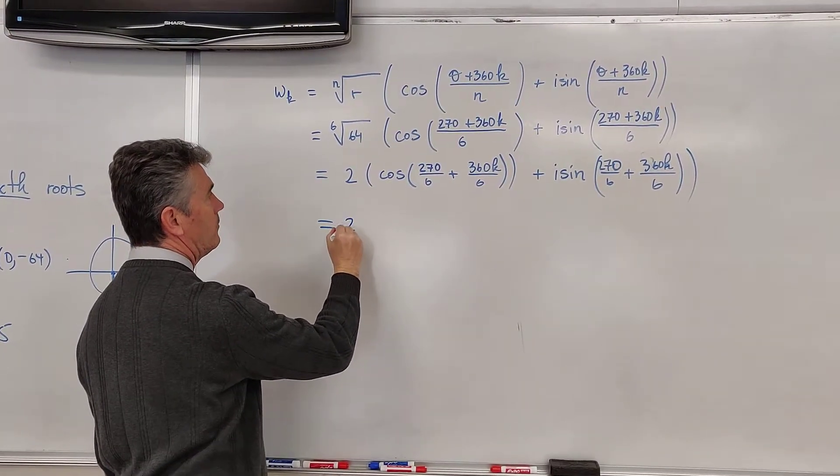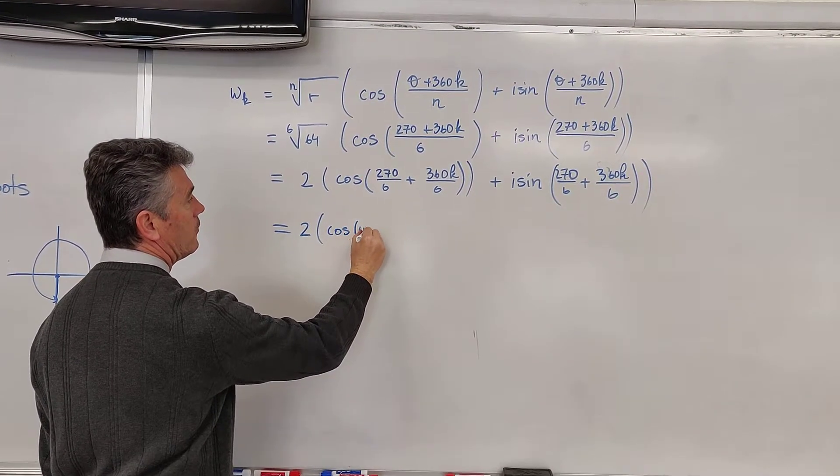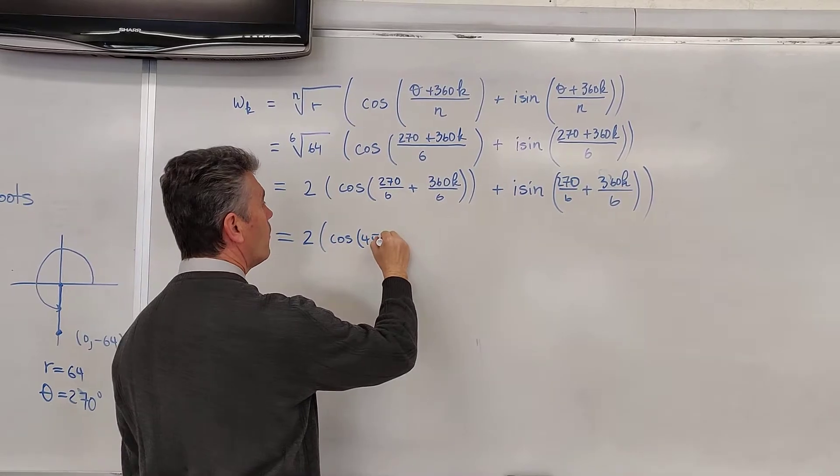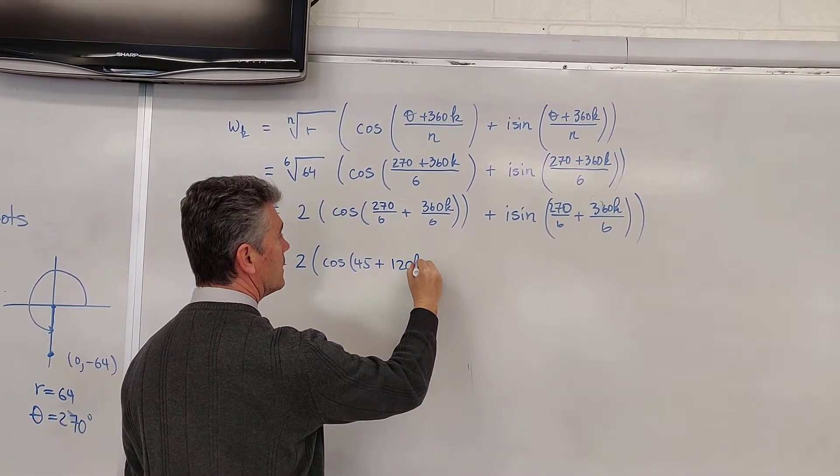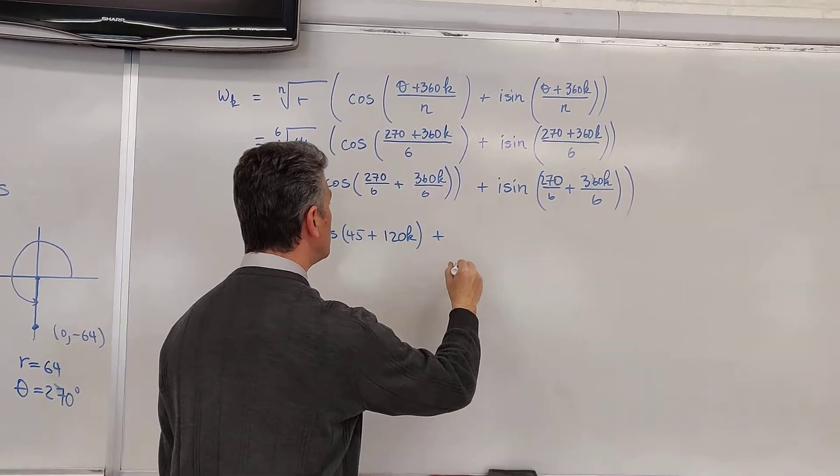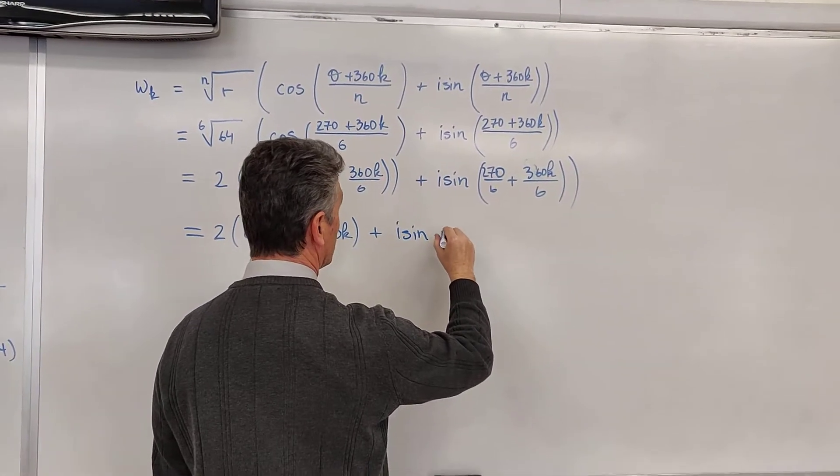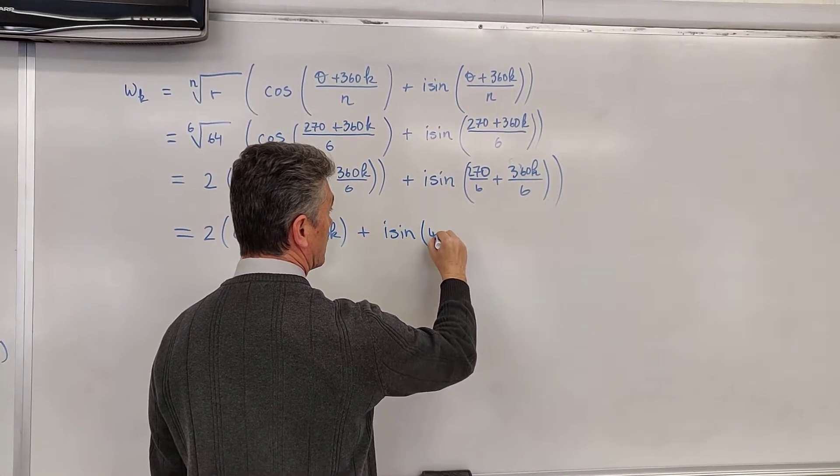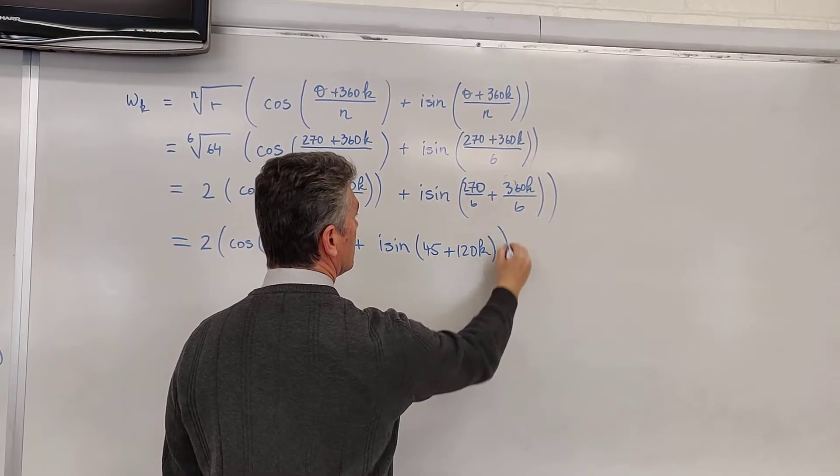Well, almost there. 2 cosine of 45 plus 120k plus i sine 45 plus 120k.